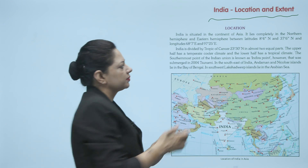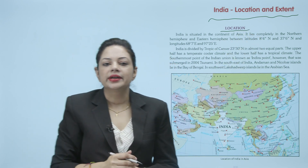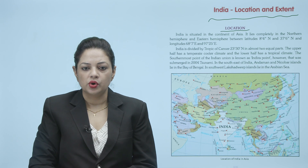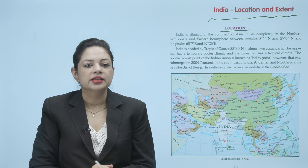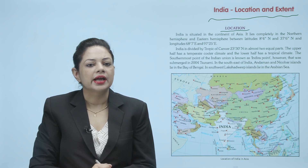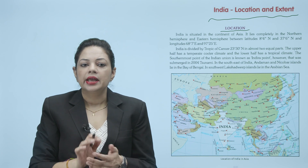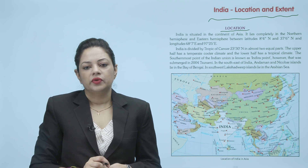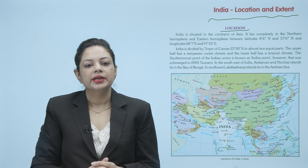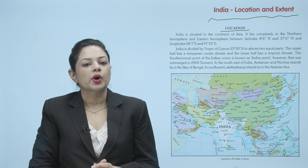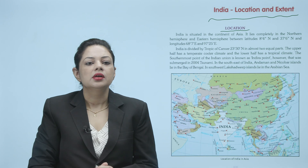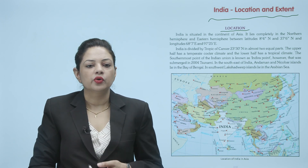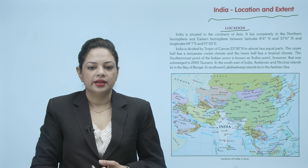Now come to the first topic, that is location. India is situated in the continent of Asia. It lies completely in the northern hemisphere and eastern hemisphere between latitudes 8 degree 4 north and 37 degree 6 minute north, and longitudes 68 degree 7 east and 97 degree 25 east. India is divided by Tropic of Cancer at 23 and half degree north in almost two equal parts. The upper half has a temperate, cooler climate and the lower half has a tropical climate. The southernmost point of the Indian Union is known as Indira Point, which was submerged in the 2004 tsunami. In the southeast of India, Andaman and Nicobar Islands lie in the Bay of Bengal, and in the southwest, Lakshadweep Islands lie in the Arabian Sea.